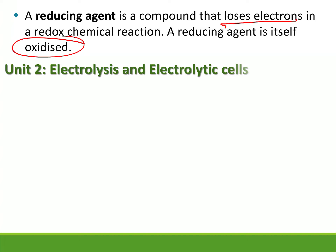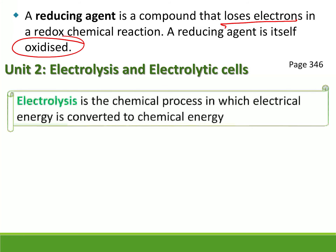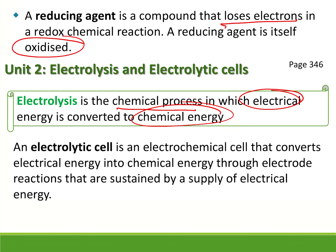Now we're going to start looking at electrolysis. There are two types of cells: electrolytic and galvanic. We're starting with the electrolytic. Electrolysis is a chemical process in which electrical energy is converted to chemical energy — we use an electric current to create a chemical reaction. An electrolytic cell is an electrochemical cell that converts electrical energy into chemical energy. This energy change is very important.